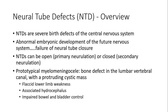The prototypical picture of neural tube defects is the myelomeningocele, where there is a bony defect mostly involving the lumbar vertebral canal and a protruding cystic mass. This leads to flaccid lower limb weakness because the segment of the spinal cord below the level of the lesion is completely absent, leading to complete absence of innervation of the lower limbs. There is usually an associated hydrocephalus and impairment in bowel and bladder control.